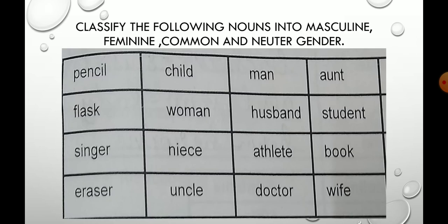Classify the following nouns into masculine, feminine, common and neuter gender. Make four columns — one for masculine, one for feminine, one for common, and one for neuter — and then place these words accordingly in the columns. Enjoy doing your work.